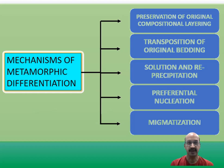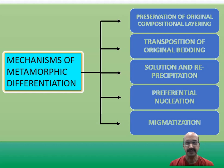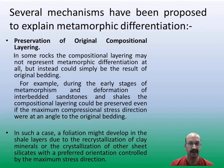Several mechanisms are proposed for the process of metamorphic differentiation. These are: preservation of original compositional layering, transposition of original bedding, solution and re-precipitation, preferential nucleation, and migmatization. Let us try to understand these mechanisms one by one.